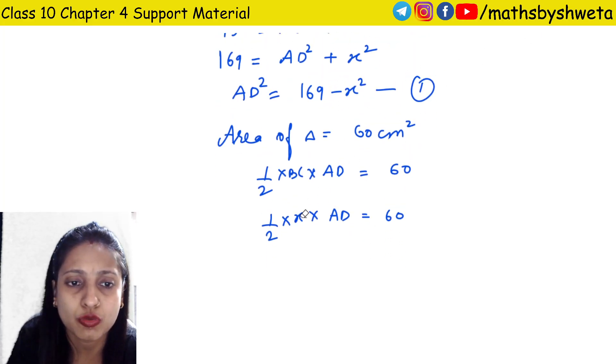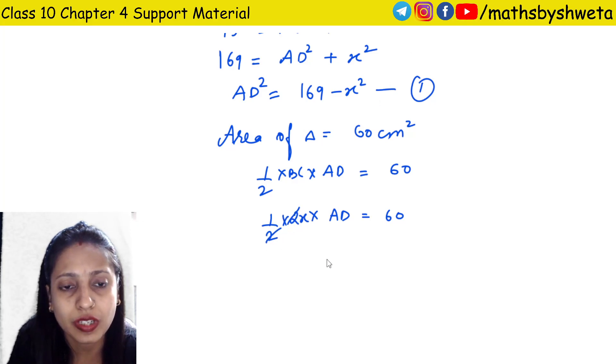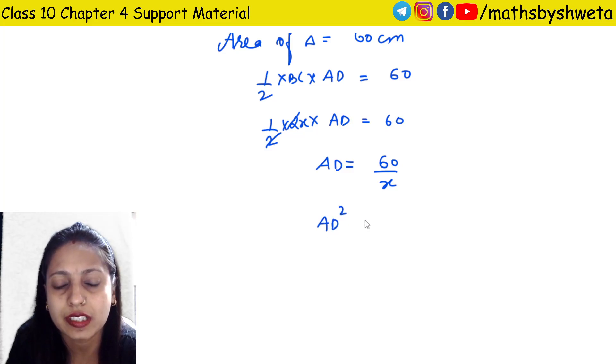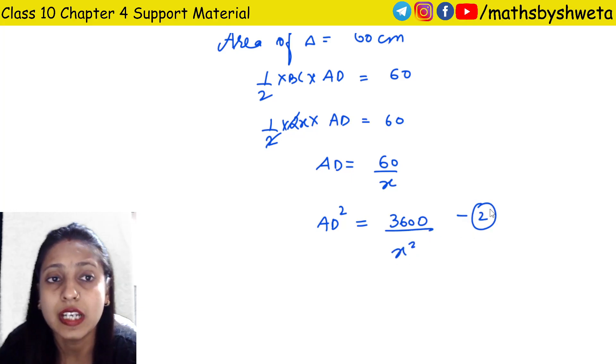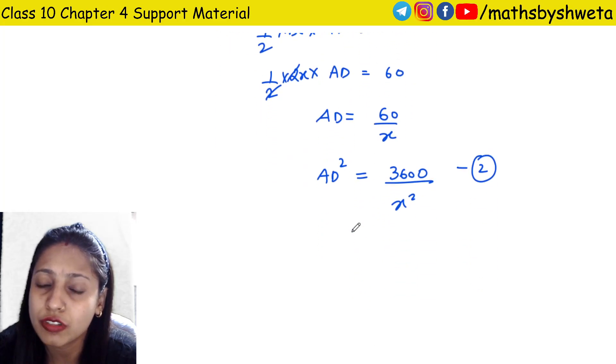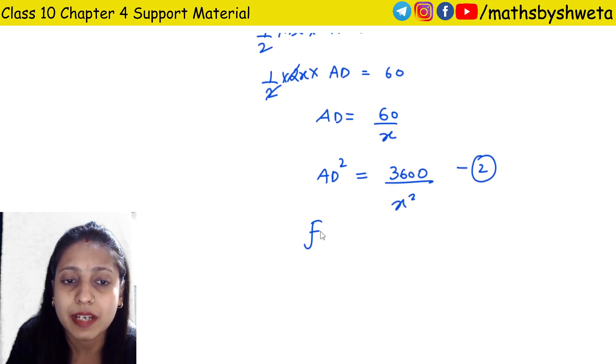BC is 2x, so 2 from 2 cancels, giving x times AD equals 60. So AD equals 60 upon x. Squaring both sides, AD square equals 3600 upon x square. This is equation 2.